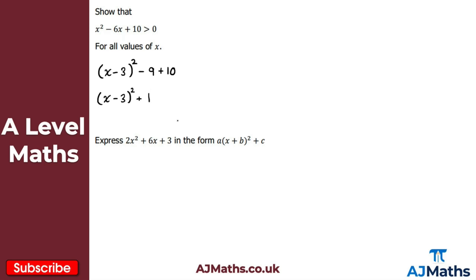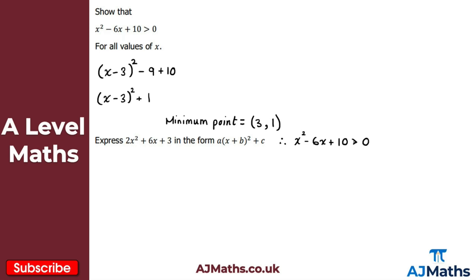So the minimum point: taking the opposite sign of minus 3 gives an x-coordinate of positive 3, and the y-coordinate is 1. The y-coordinate is above the x-axis — it's greater than 0 — so therefore x² minus 6x plus 10 is strictly greater than 0 for all values of x. That's our solution to the first practice question.